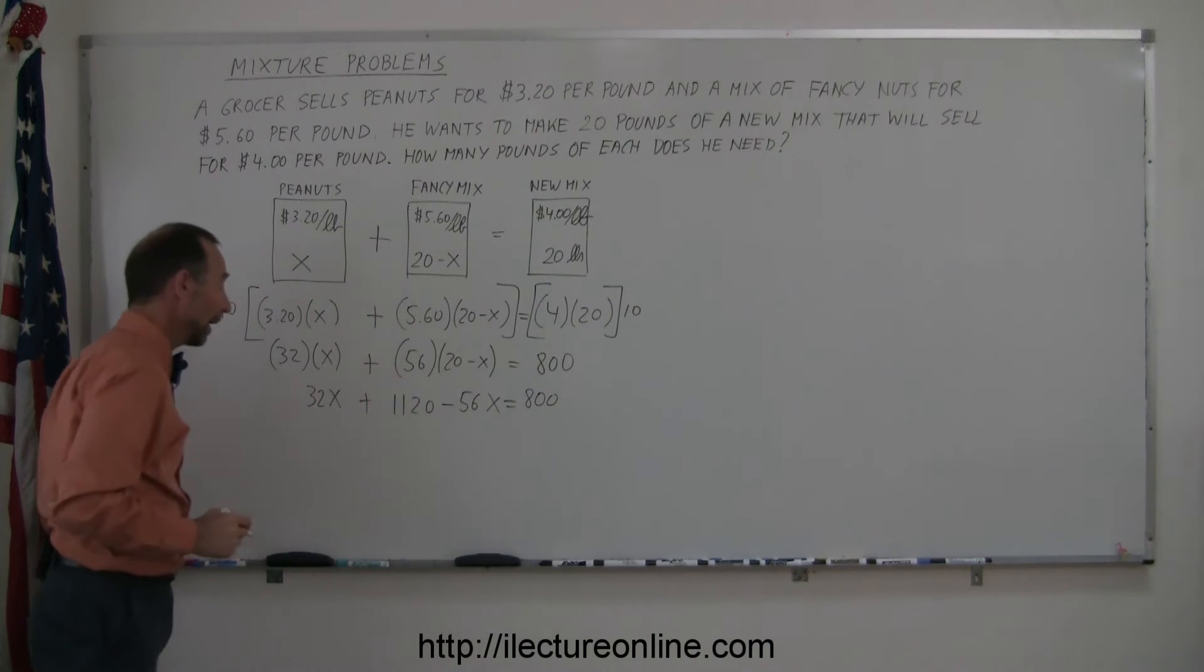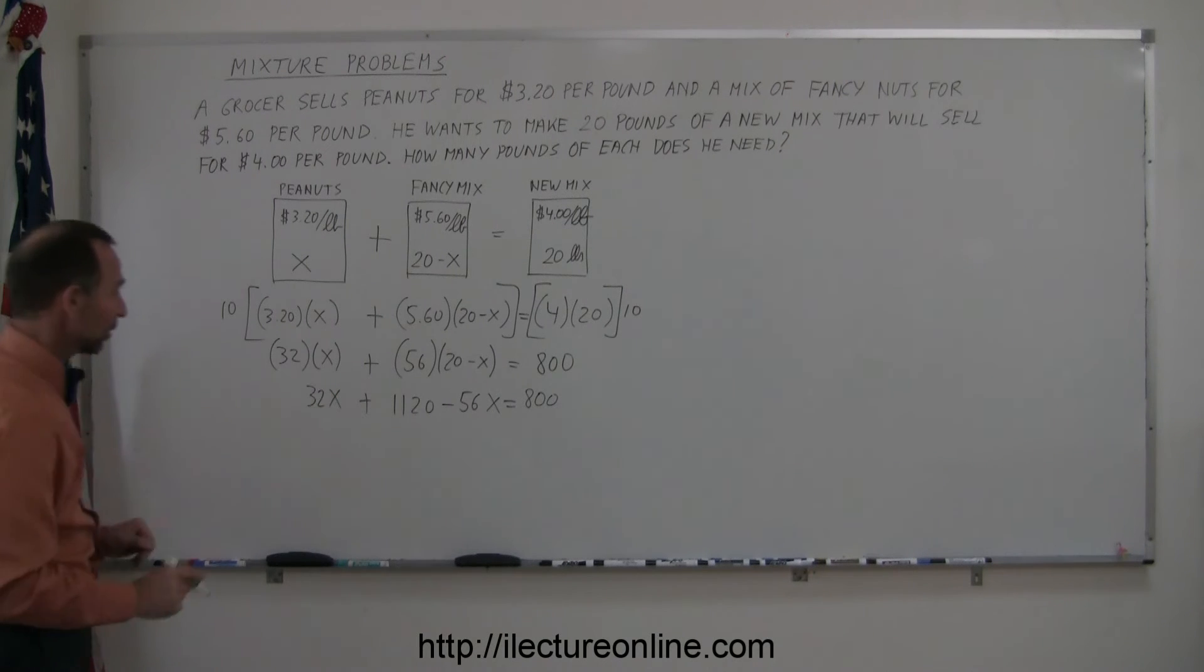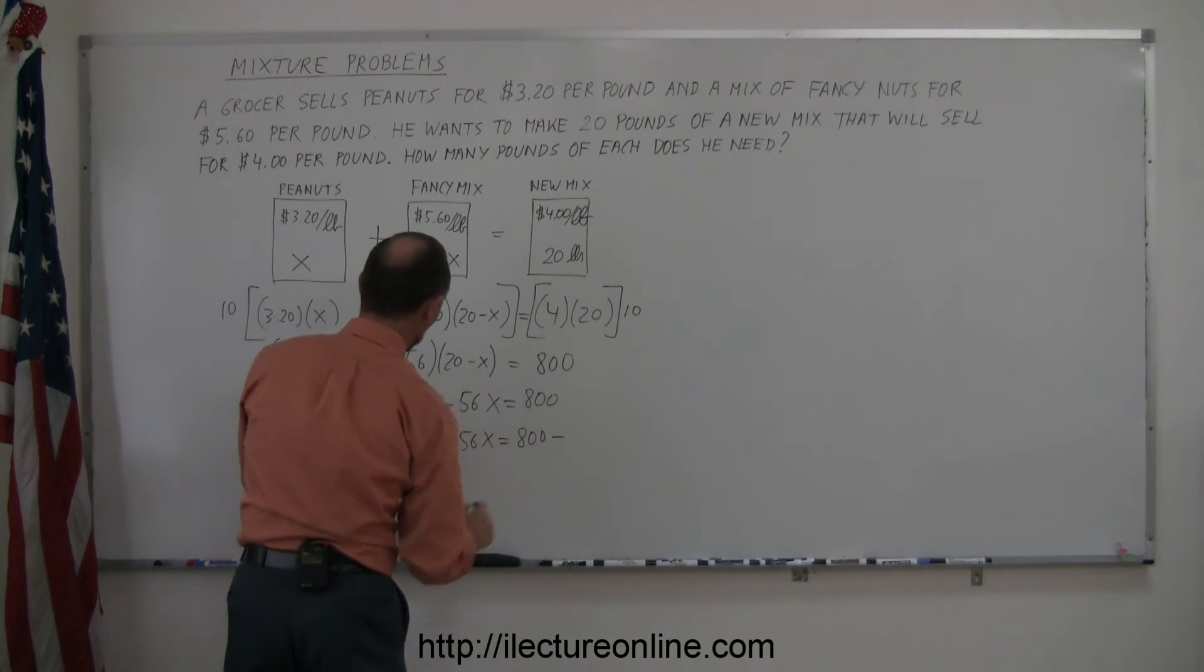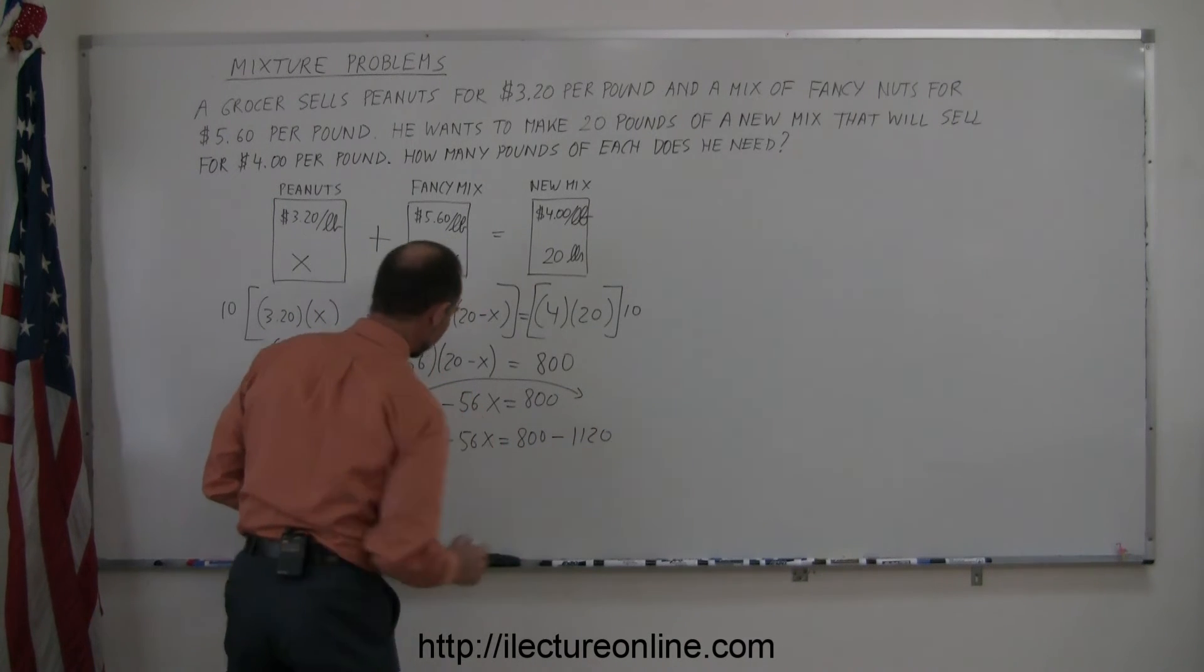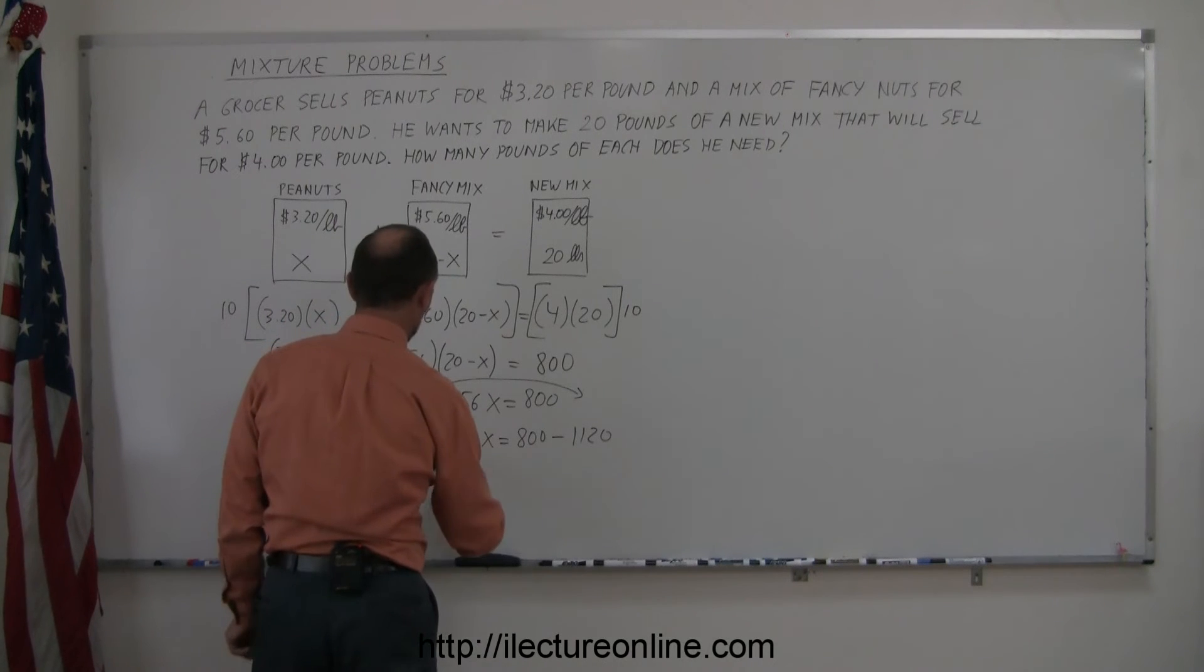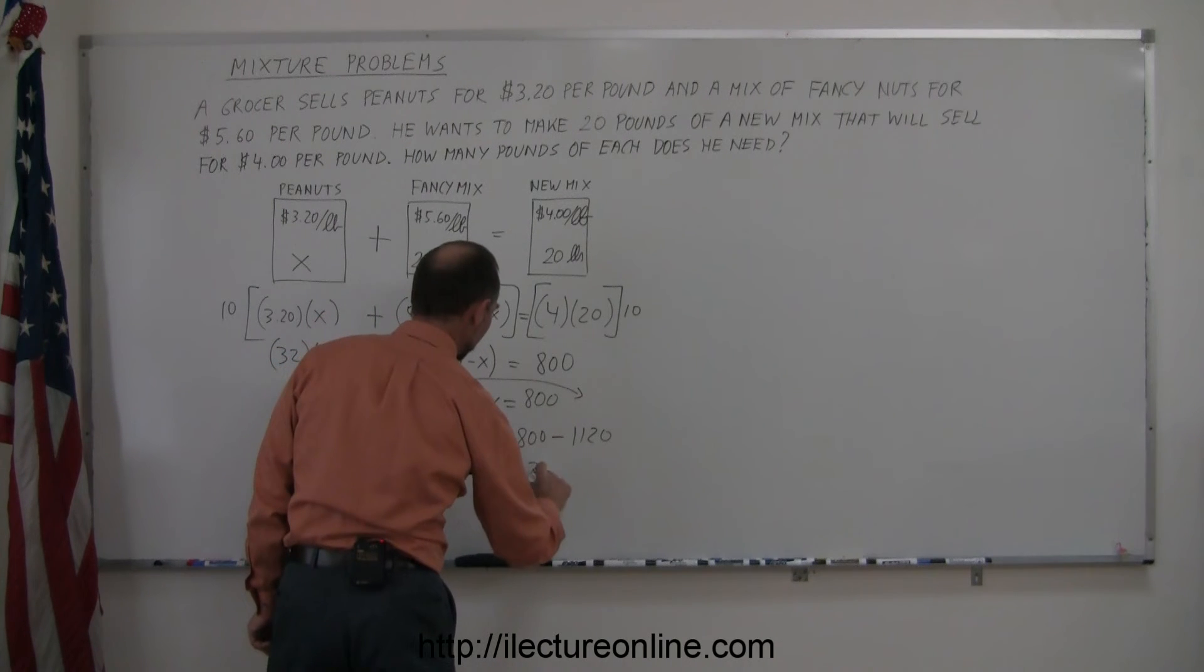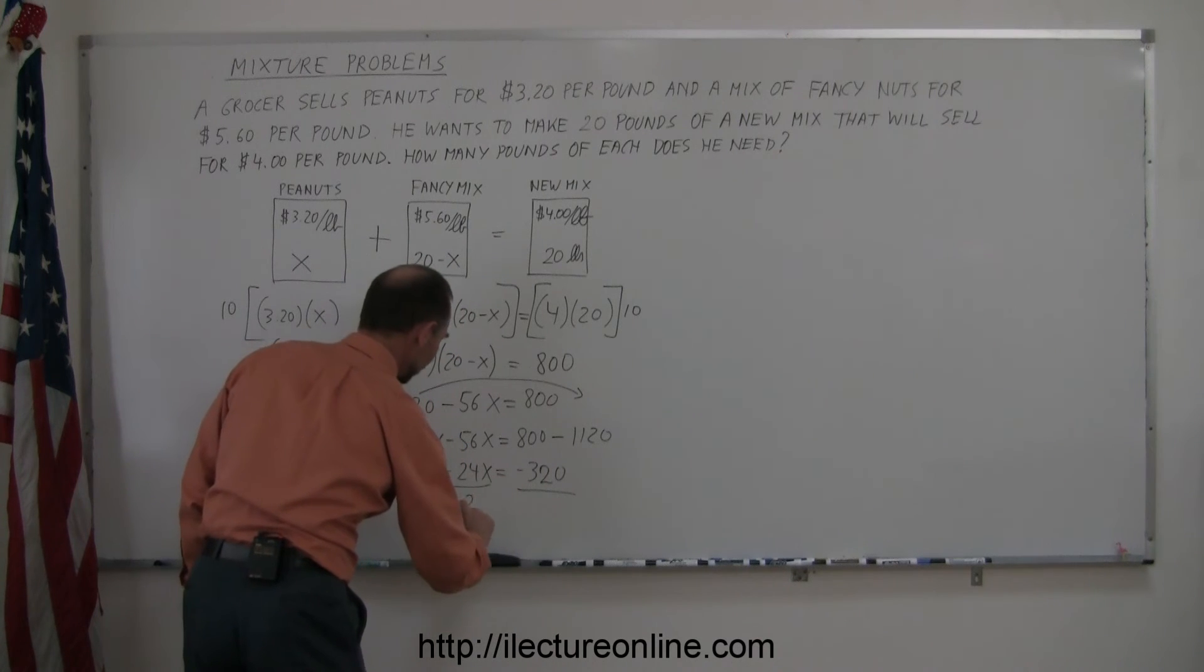Now we're ready to solve for X. Let's move all X's to one side, all the numbers to the other side. So we have 32X minus 56X equals 800 minus, when we bring the 1,120 across, that becomes minus 1,120. 32 minus 56, that's 24, so minus 24X equals 800 minus 1,120 is minus 320.